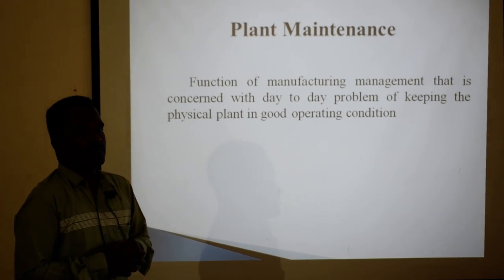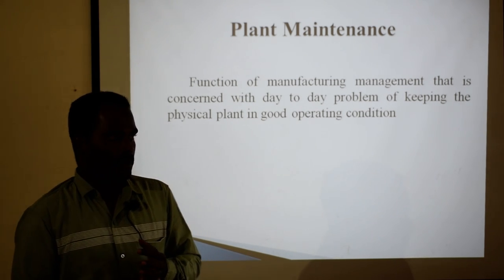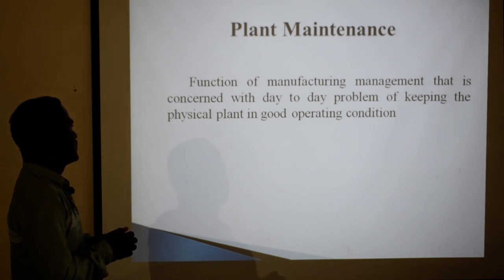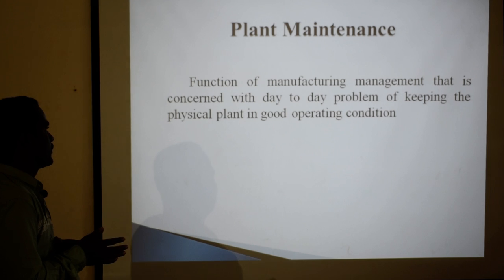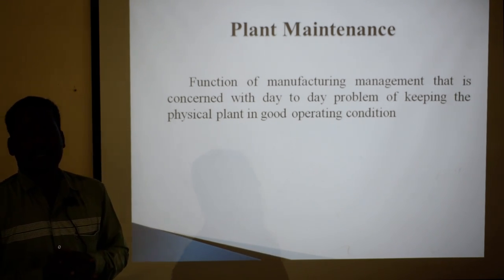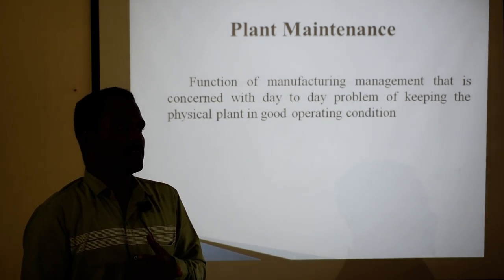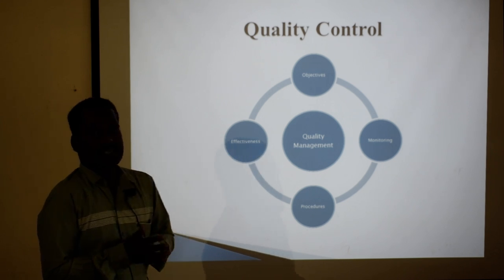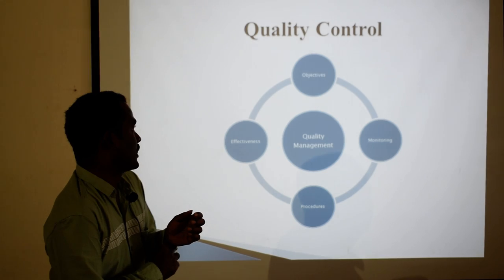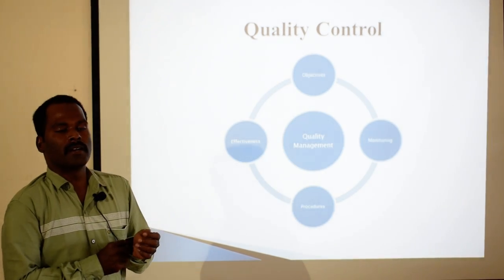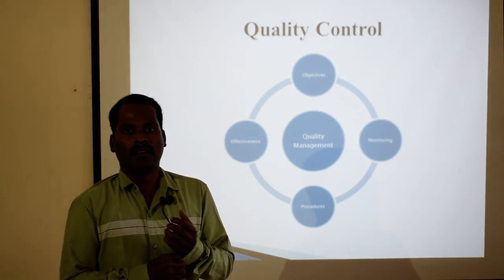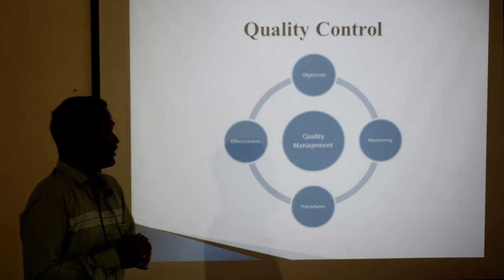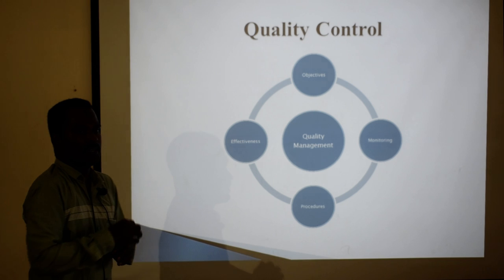Then plant maintenance — every organization has to maintain their plant, which will face difficulties such as repairs or defects. It is a function of manufacturing management concerned with the day-to-day problem of keeping the physical plant in good operating condition. We have to maintain our machinery, our laborers, and such other things. Then finally, quality control — we monitor whether our production system is going well, what procedures we are following while producing the products, and the effectiveness of the production.